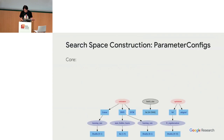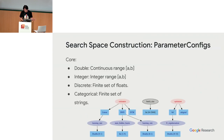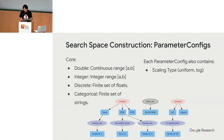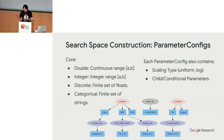We also support conditional parameters — if this parameter is active, then so are these other parameters. This is common for cases like choosing the SGD optimizer, where you'd have one set of hyperparameters, versus Adam, where you'd have momentum parameters that don't exist for other optimizers.